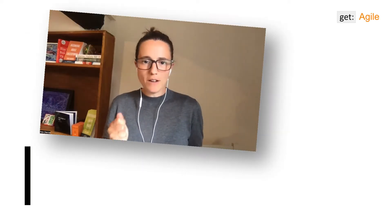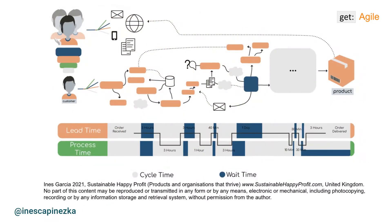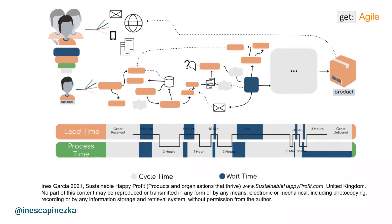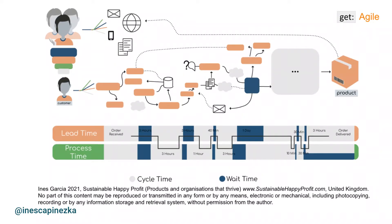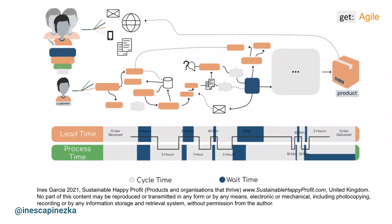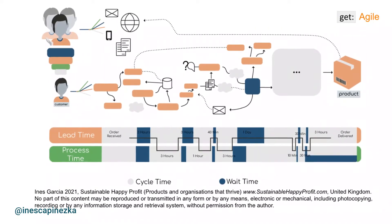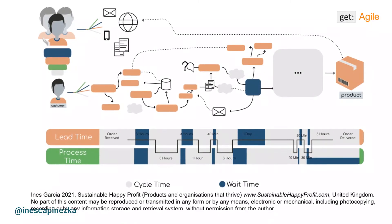Today we're learning about journey mapping, and this goes beyond agile practice. A journey map, a process map, a user story mapping — all these mappings essentially are the ability to visualize the experience of achieving a goal.